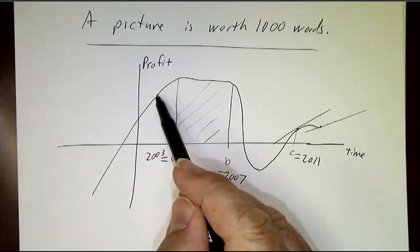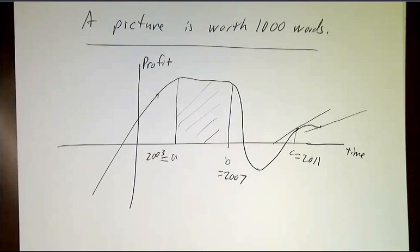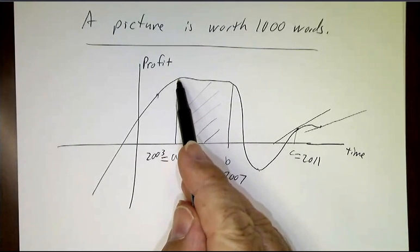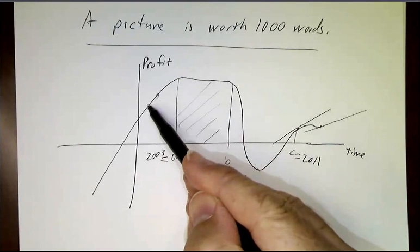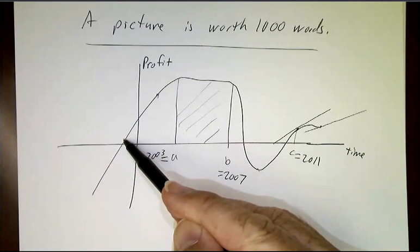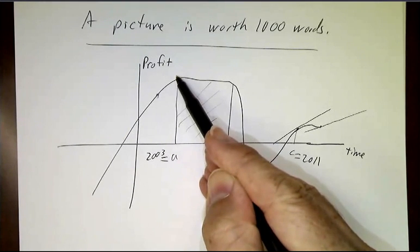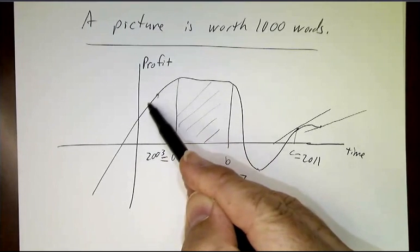What was happening over here? Well, you weren't making as much money as you were at the peak, but you were on your way up. Things were getting better. Things weren't very good at this time. Things were very good at this time. You were on your way up. It was pretty steep.